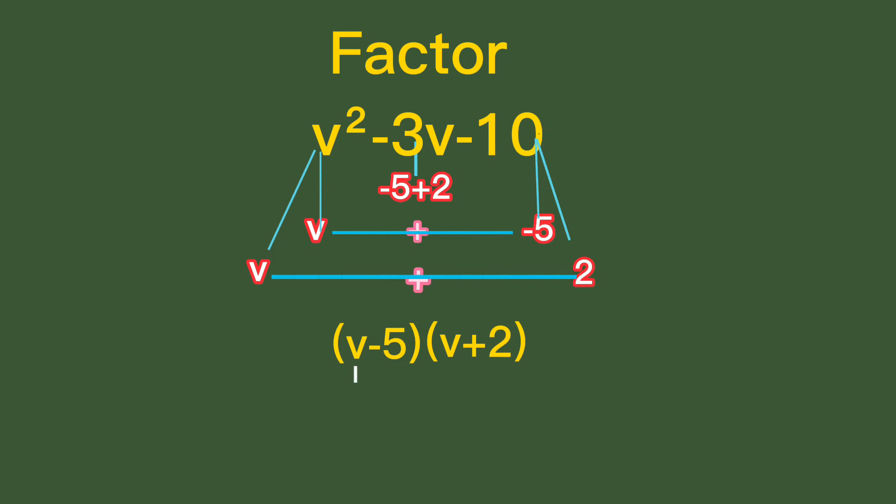We have v times v equals v squared, v times positive 2 equals 2v, negative 5 times v equals negative 5v, and negative 5 times 2 equals negative 10. The sum of this is v squared minus 3v minus 10.